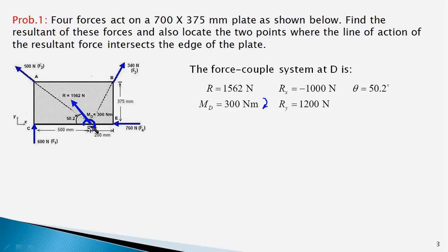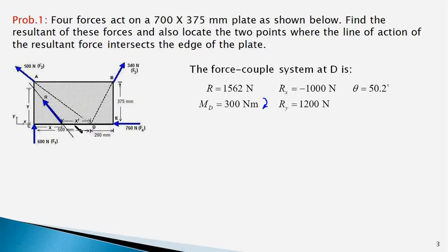A question arises: which side of point D should we move the force — to the right or to the left? We cannot move the force to the right, because its moment about point D would be in the anticlockwise direction, which is opposite to the clockwise couple moment. Hence, we have to necessarily move the force R to the left of point D by distance x prime, so that the moment of R about point D is in the clockwise direction and its magnitude equals MD, that is 300 Newton meter. Then we can eliminate the couple.